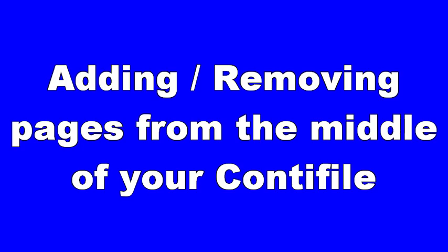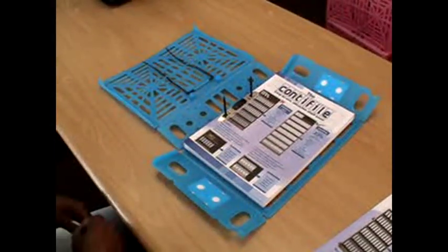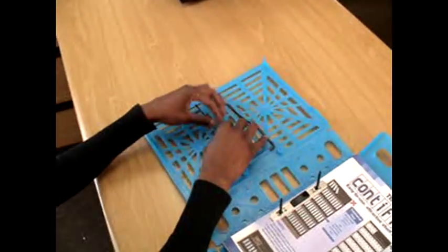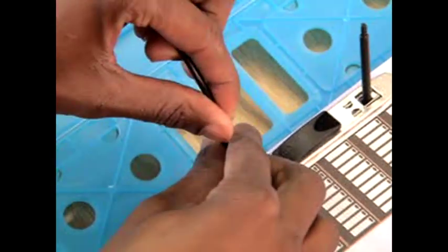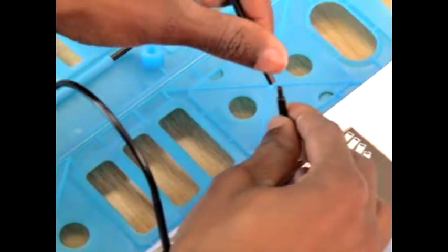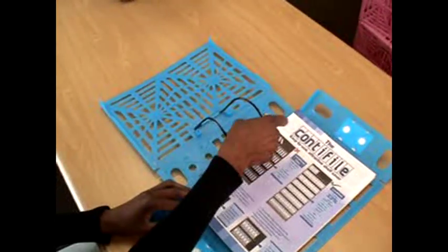To add or remove pages from the middle of your Conti file, now this is tricky. Unclip the flexible tubing from the hooks on the underside of the front cover. Pull these over and push them onto the ribs on top of the pins, thus creating the arches.